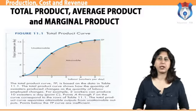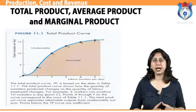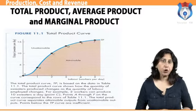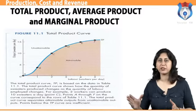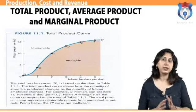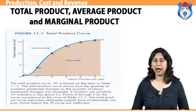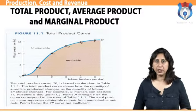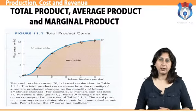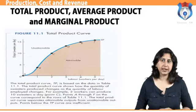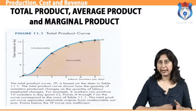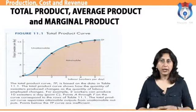Production by a firm can be classified as total product, average product, and marginal product. The factors of production are combined to make goods and services. The value of total production by using all factors of production is known as total product or total output. The total quantity of output produced by a firm for a given quantity of inputs is termed the total product.